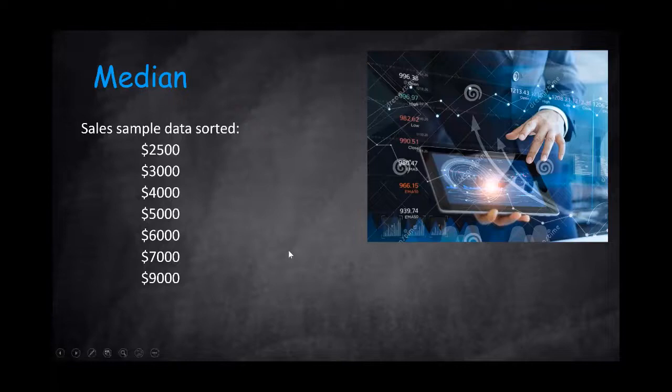In this case, I took the sales sample and I sorted it. And if I take the middle observation, 5,000 will be the median in this example.